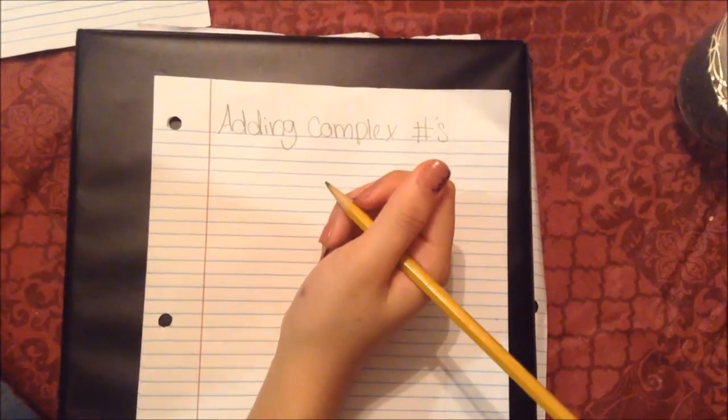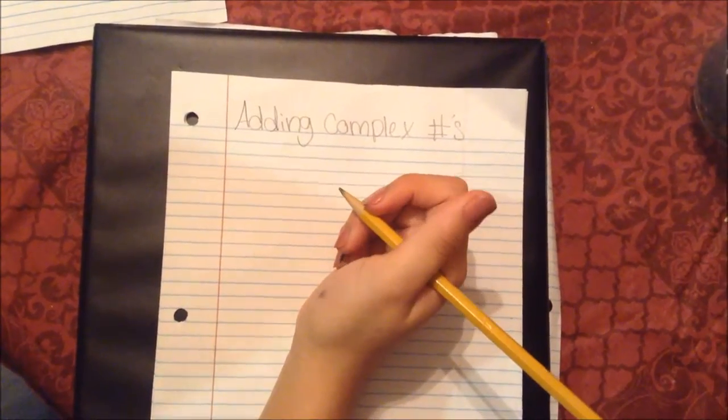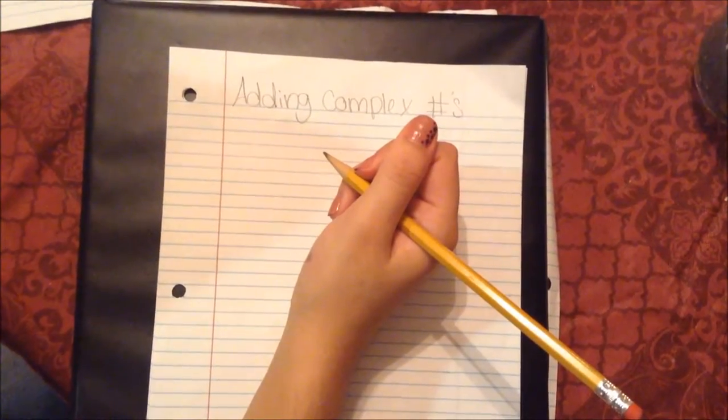First, I will be explaining how to add complex numbers. A complex number is a number that can be expressed in the form of A plus Bi. So we will start off with this example.